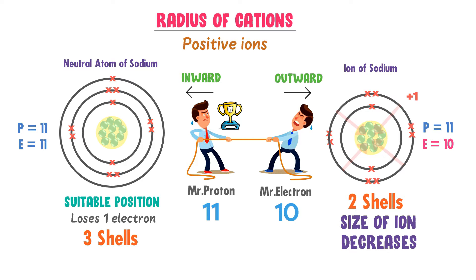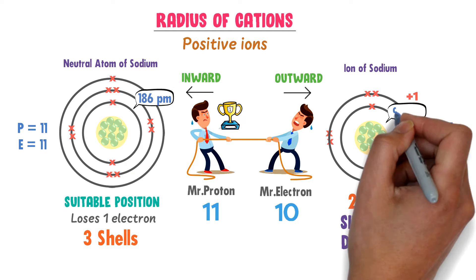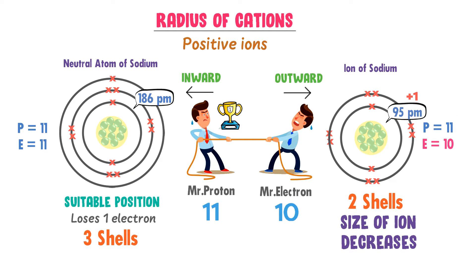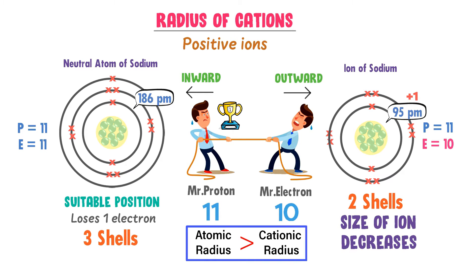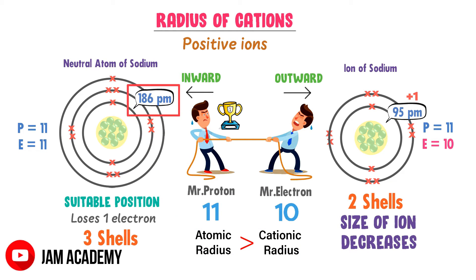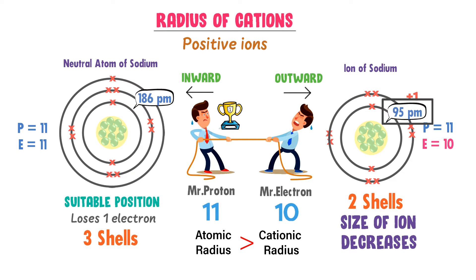If we measure the atomic radius of sodium, it is about 186 picometers, while the ionic radius of sodium ion is about 95 picometers. Thus, we learn that atomic radius is always bigger than the radius of its cation. The atomic radius of sodium is 186 picometers and the ionic radius of sodium ion is about 95 picometers.